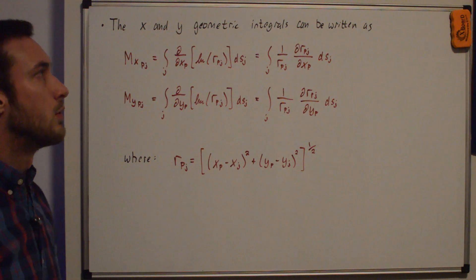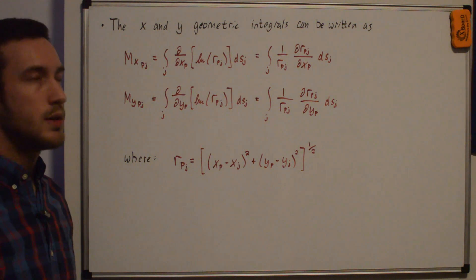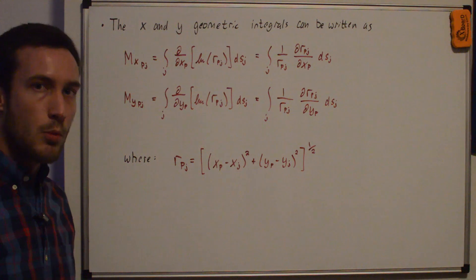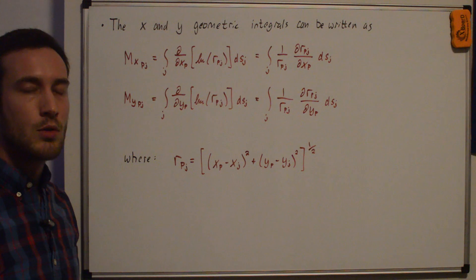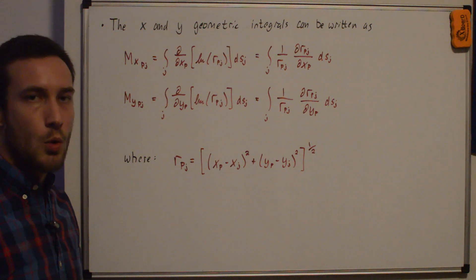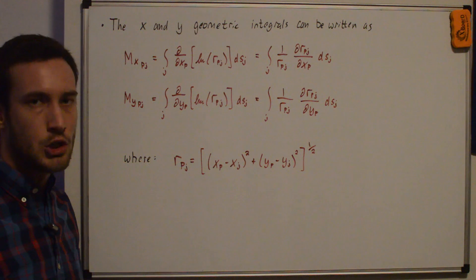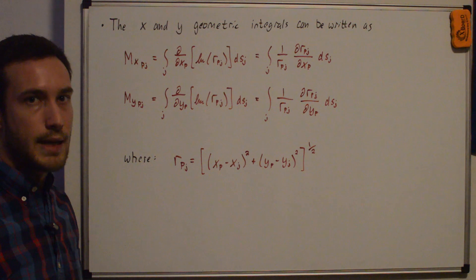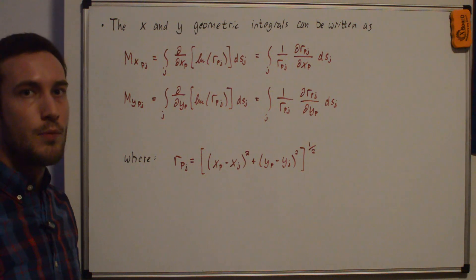We can write the geometric integrals being solved in this video as MXPJ and MYPJ for both X and Y. My normal velocity geometric integral was called IIJ, and the tangential velocity integral was called JIJ — both for the source panel method. For the vortex panel method, the normal velocity will be called KIJ, the tangential velocity LIJ, and the X and Y velocity components NX and NY. This keeps everything straight, consistent with my code.